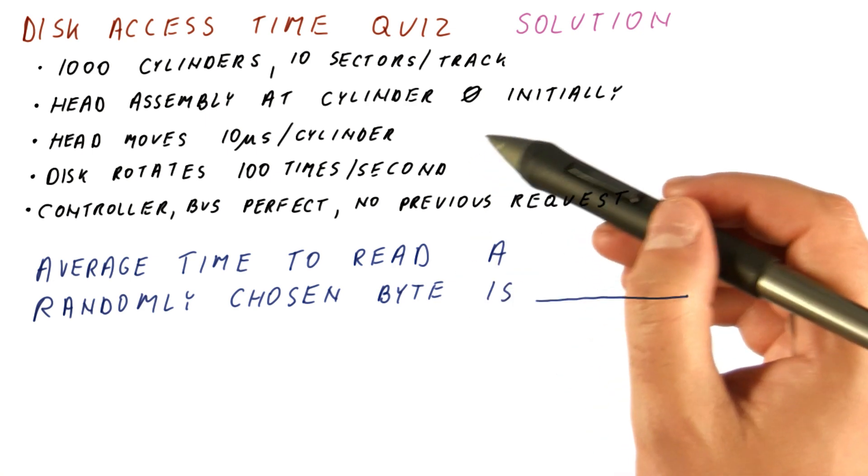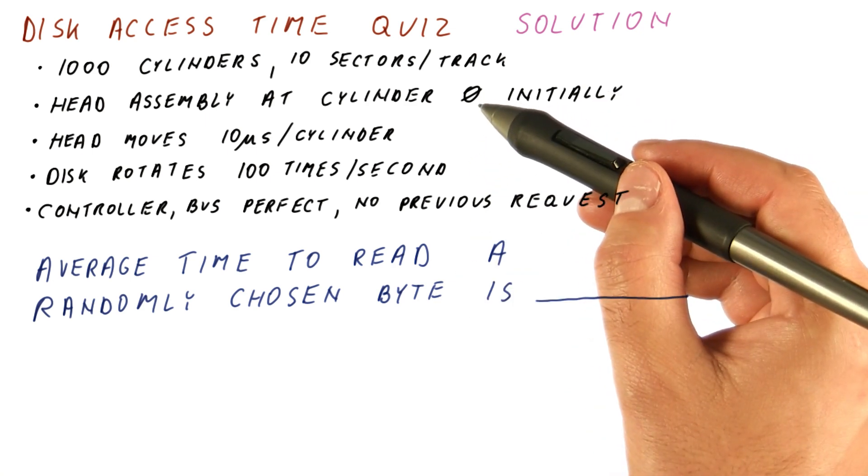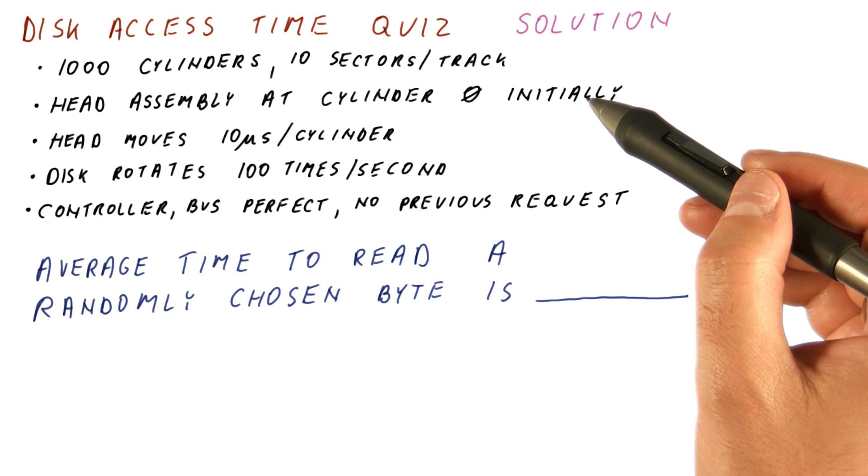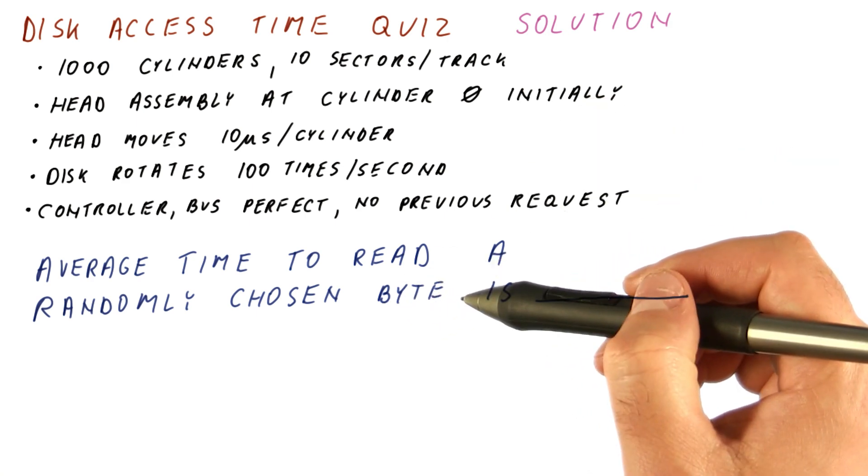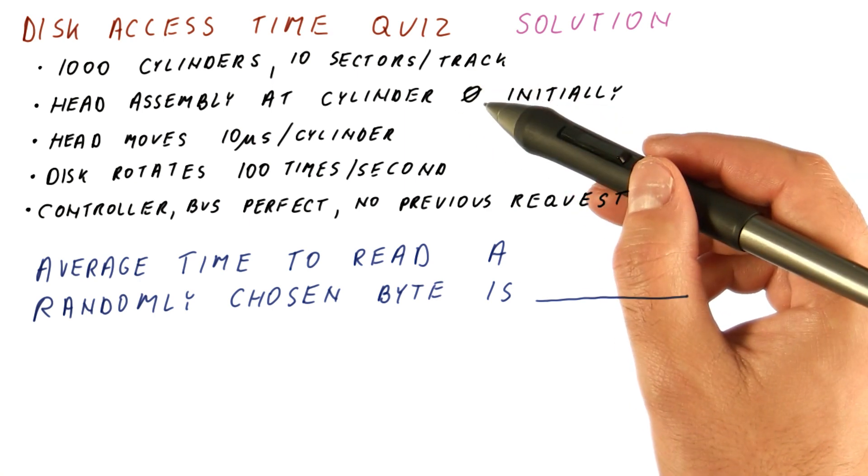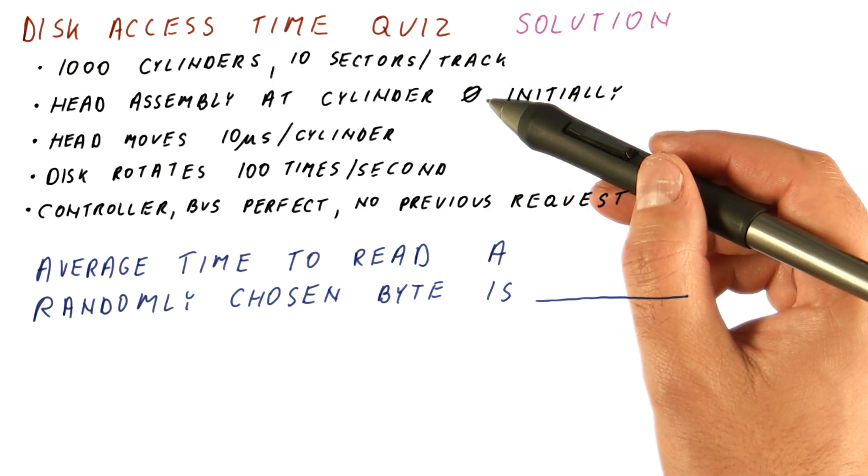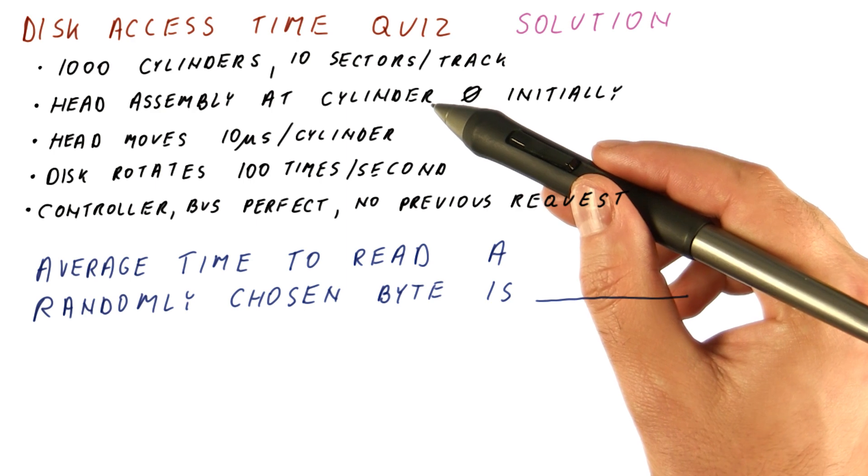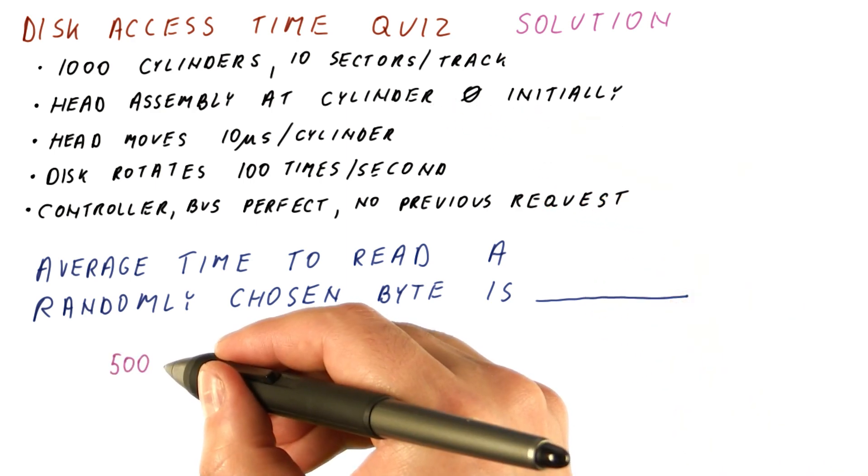The head assembly is at one end of the disk. A randomly chosen byte will be at the cylinder where we are or 999 cylinders away or anywhere in between with equal probability. So on average, we will be seeking 500 cylinders away.